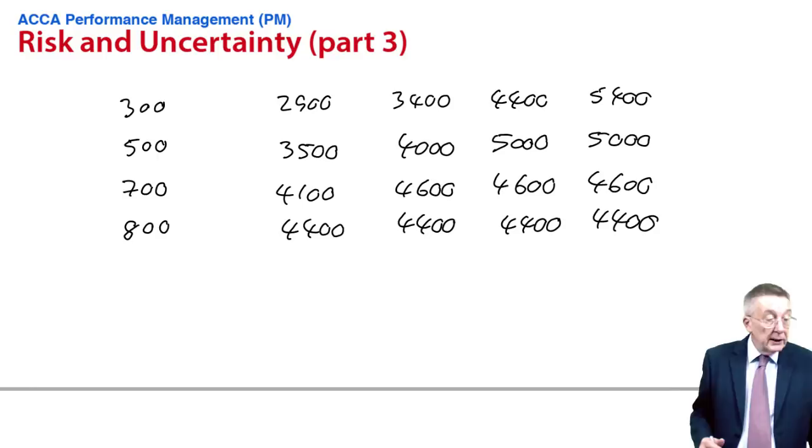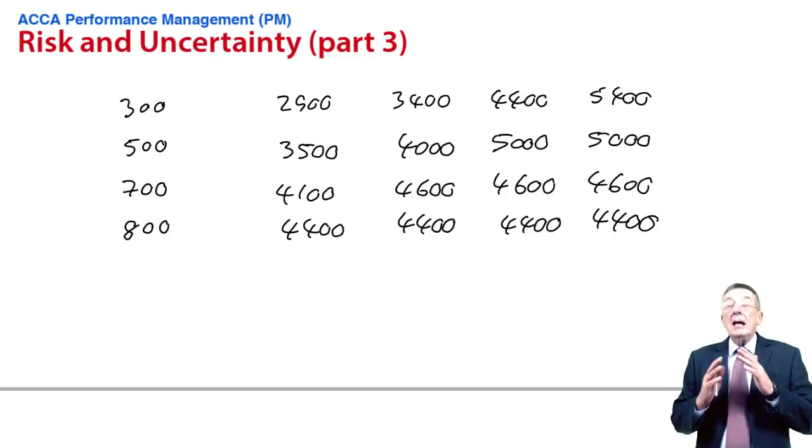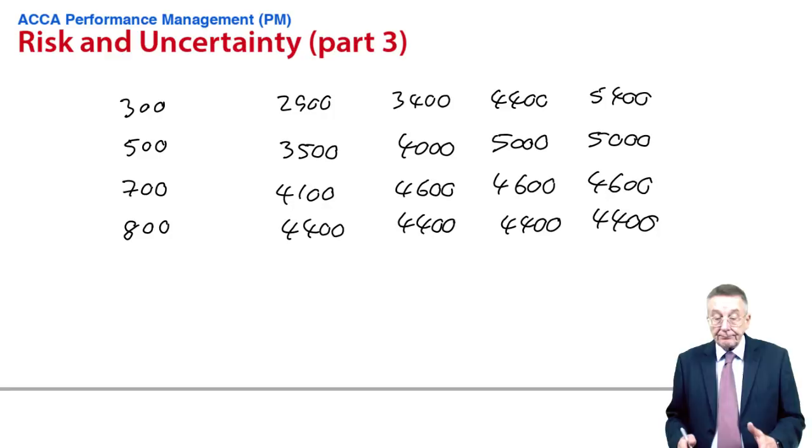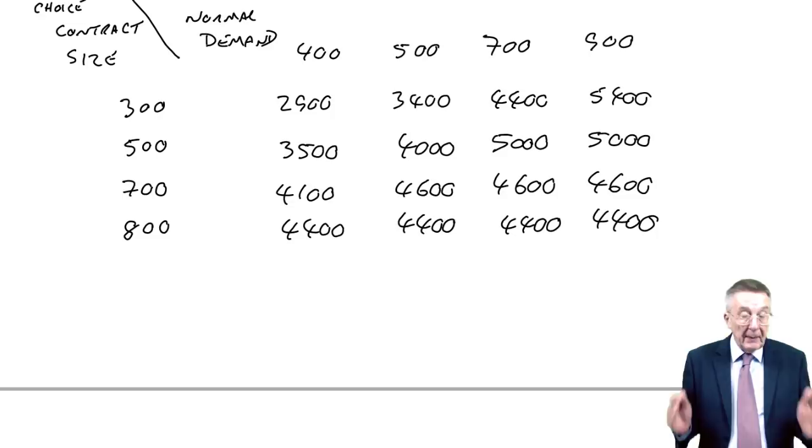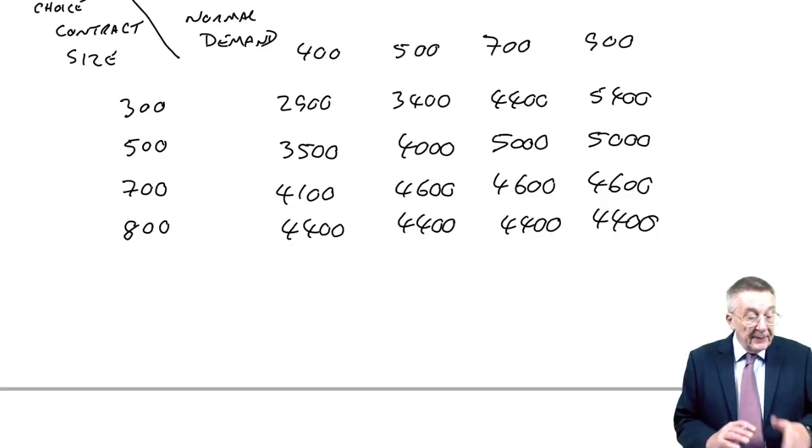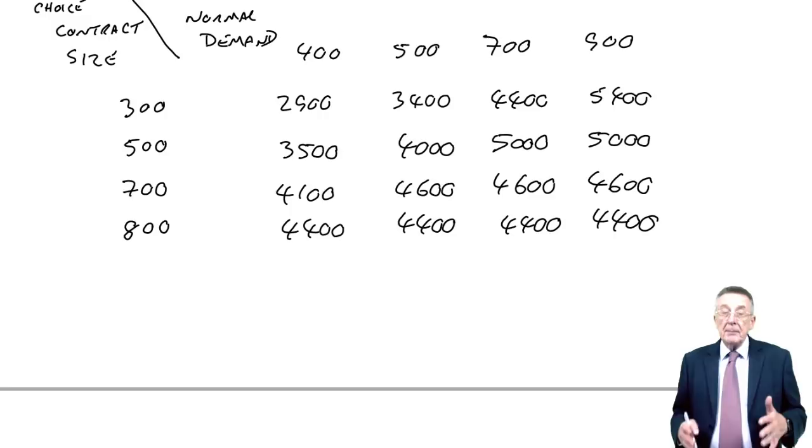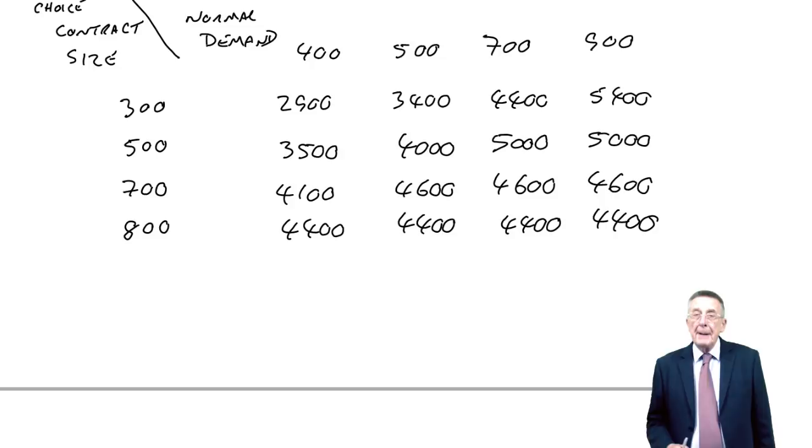I remember what we're up to. I set up the profit table, which was part A of the question, and we're working through the four different ways you can be asked to make a decision. We've done maximin, maximax, which I hope you found very straightforward. And in the last lecture, I hope I managed to explain the logic behind minimax regret with that tiny little example I invented.